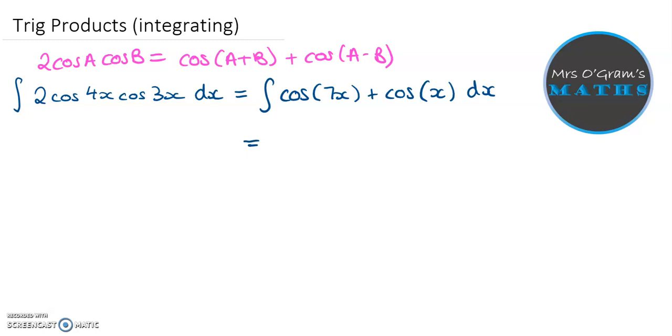Okay, so if we integrate cos, we get sine. So this would go to sine of 7x, and then we need to divide through by the 7, and cos of x just goes straight to sine x plus c.